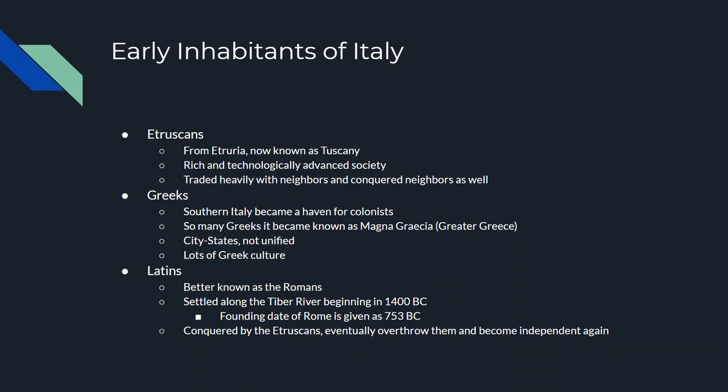Second are the Greeks. All those Greeks who were colonizing other places — a lot of them went to southern Italy. There are so many Greeks in southern Italy that they called it Greater Greece, or Magna Grecia. They kept Greek culture and city-states; it was not unified. They brought their religion, architecture, writing, and culture. They did a lot of trading with the Etruscans and with the Latins.